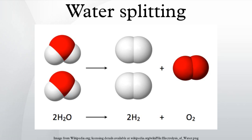When the electrolysis is conducted at high pressures, the produced hydrogen gas is compressed at around 120 to 200 bar. By pressurizing the hydrogen in the electrolyzer, the need for an external hydrogen compressor is eliminated; the average energy consumption for internal compression is around 3 percent.